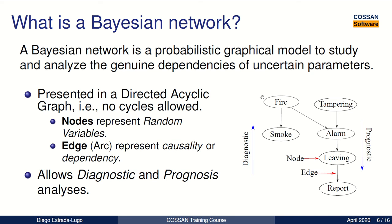This means that there are no cycles in our network. The network is made of nodes that represent the events or components of a system and they have an associated random variable. Then these nodes are connected through arcs or edges that represent the causality or dependency between these nodes.